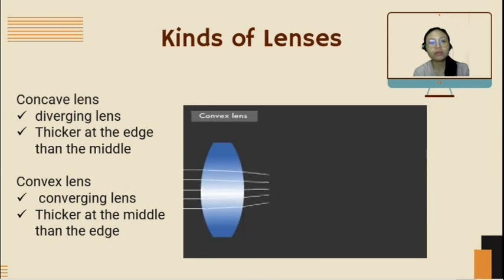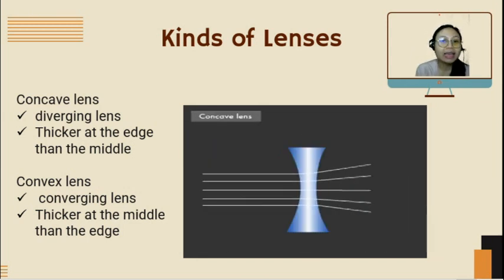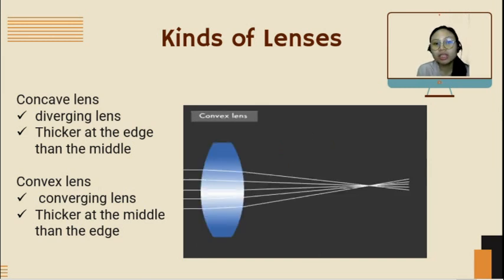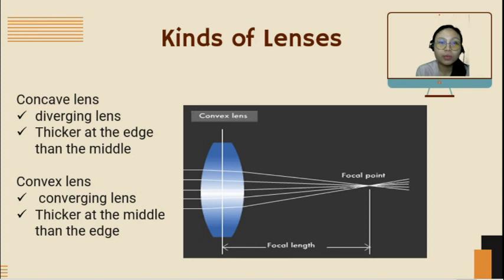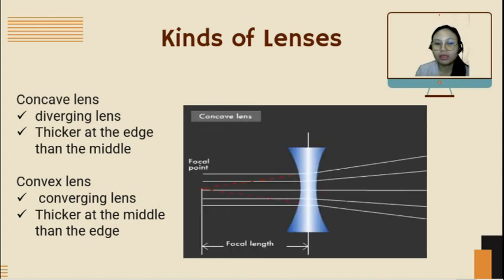So to summarize: a concave mirror is a converging mirror, but a concave lens is a diverging lens. A convex mirror is a diverging mirror, but a convex lens is a converging lens. They are opposite — remember that.